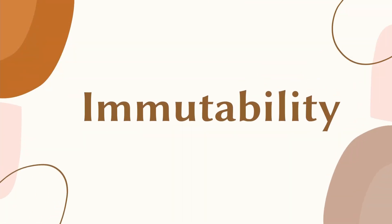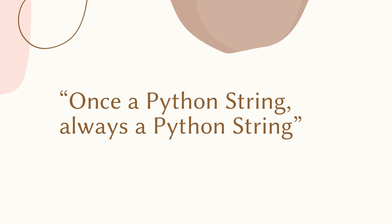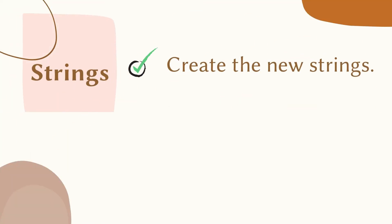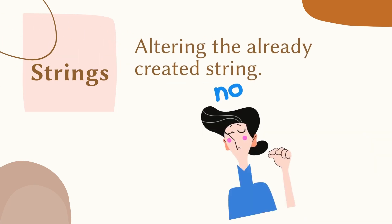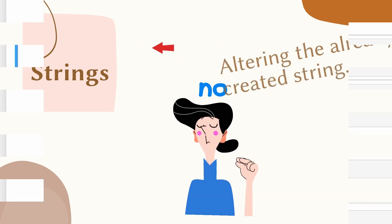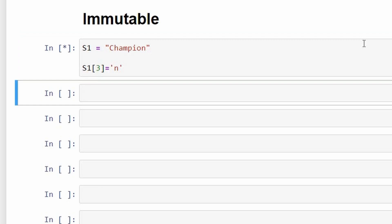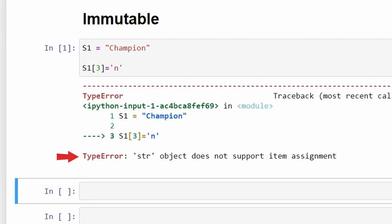Now moving on to the most important property of strings: immutability. By definition, anything immutable cannot be changed. Once a Python string is created, its content cannot be altered. For example, we have a string 'champion' assigned to variable s1. If we try to replace 'm' with 'n' by writing s1[3] = 'n', Python gives us an error stating that the string object does not support item assignment, which proves that Python strings are immutable.